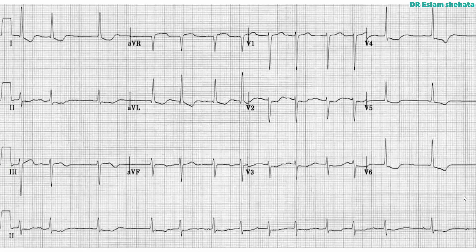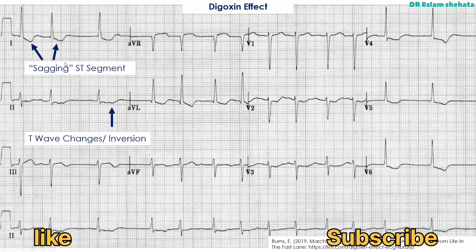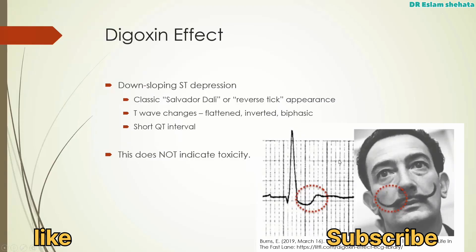Here's another example. This is an example of the digoxin effect. The key changes are these sagging ST segments and T wave inversion. The classic signs of the digoxin effect are this down-sloping ST segment depression, and it's called the Salvador Dali or reverse tick appearance.